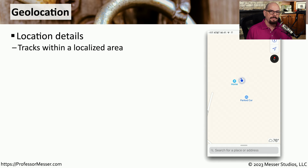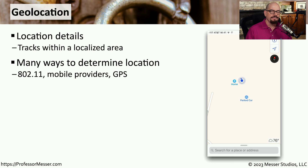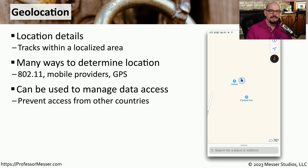Another useful piece of information when managing states of data is where the data and the user happen to be. One way to determine this is by using geolocation. Geolocation involves a number of different technologies to determine where someone is located — for example, GPS, 802.11 Wi-Fi information, or details from a mobile provider. Once a user's location is identified, you can use that information to determine what type of access they might have to data.